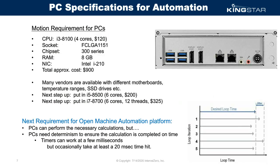For a specific PC recommendation: we like the Intel i3-8100, an eighth-generation CPU with four cores at only $120. The LGA 1151 socket with the 300-series chipset means hundreds of compatible motherboards are available. For RAM, Windows 10 alone uses over three gigabytes, so put in eight gigabytes. You need an Intel i210 NIC card — it's easy to get and very deterministic. Total cost in a metal enclosure with a solid-state drive is around $900.